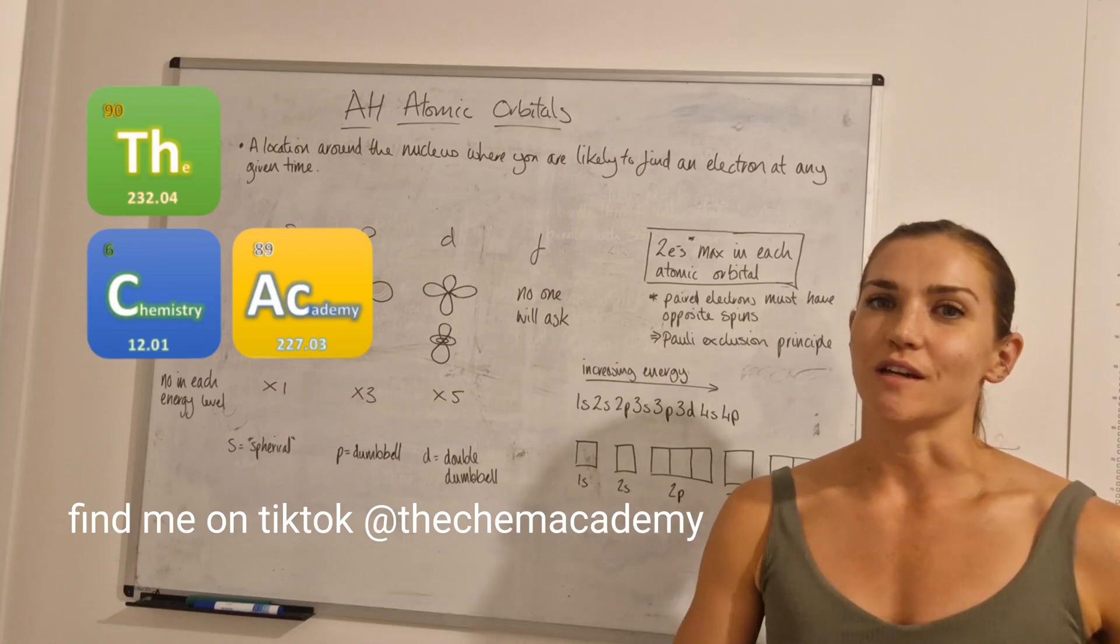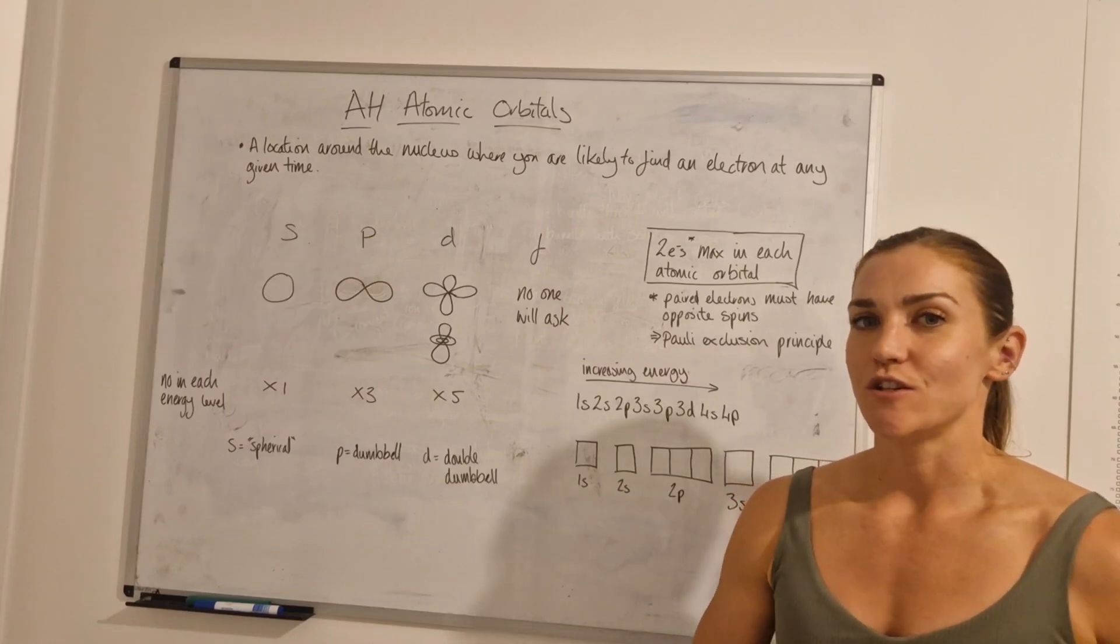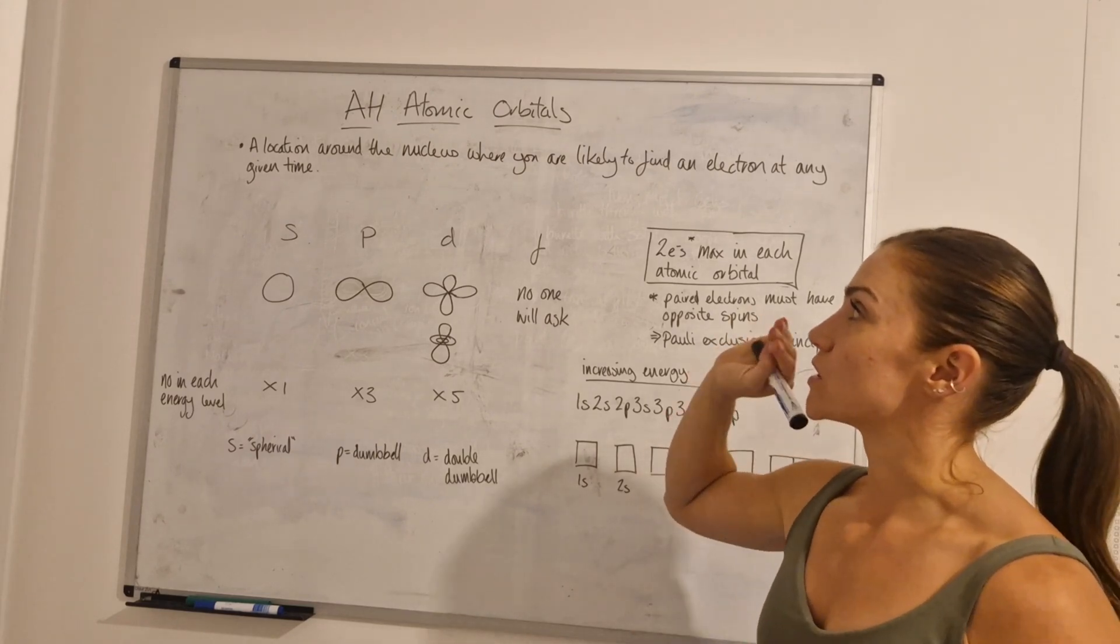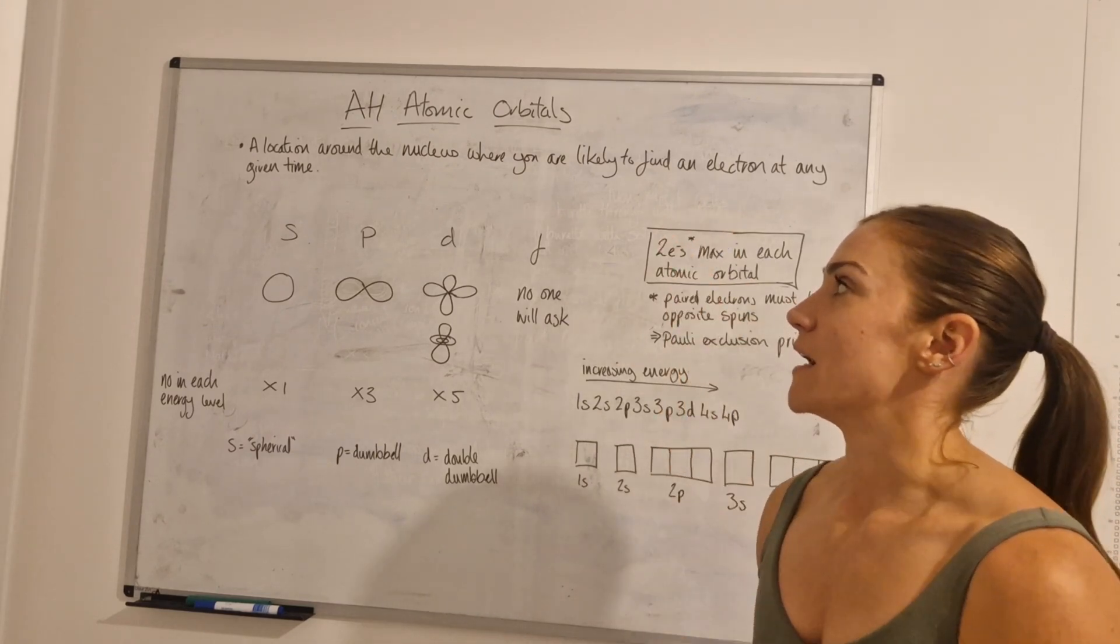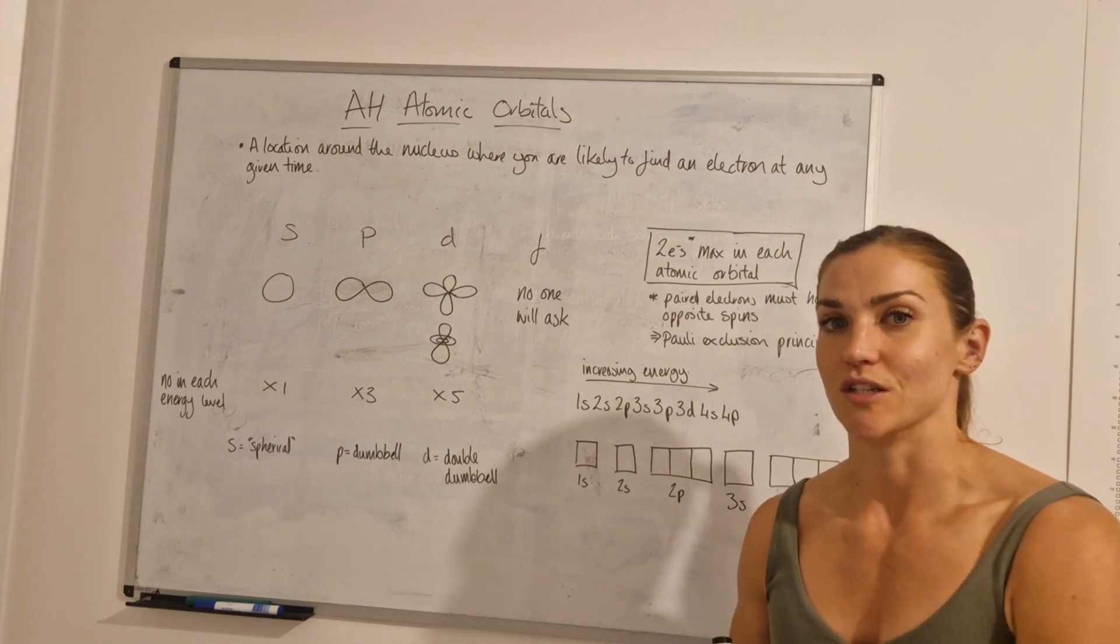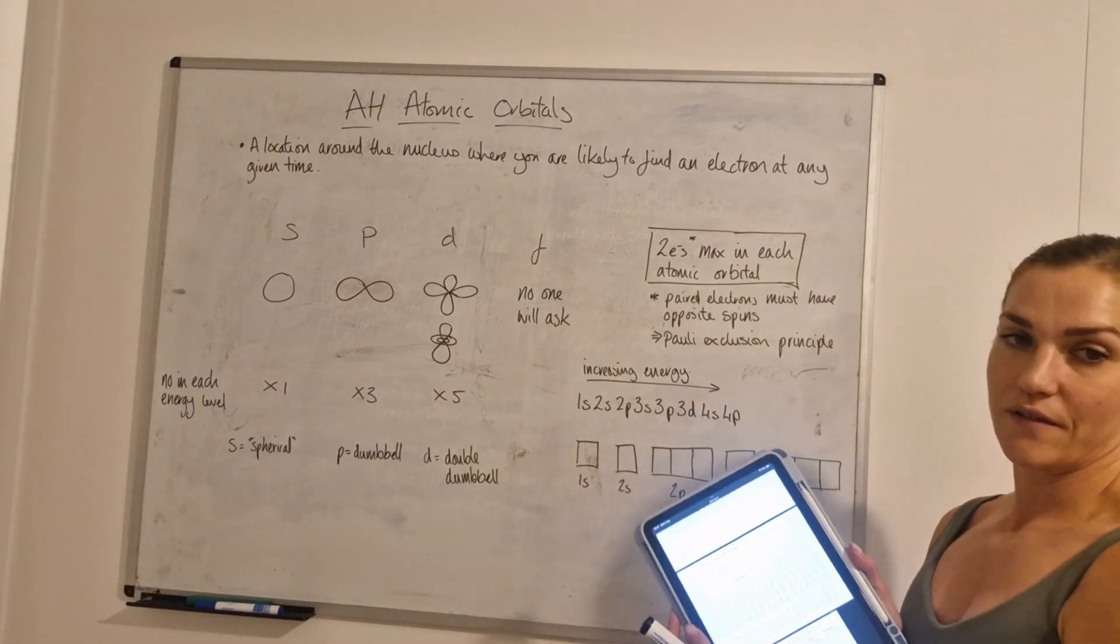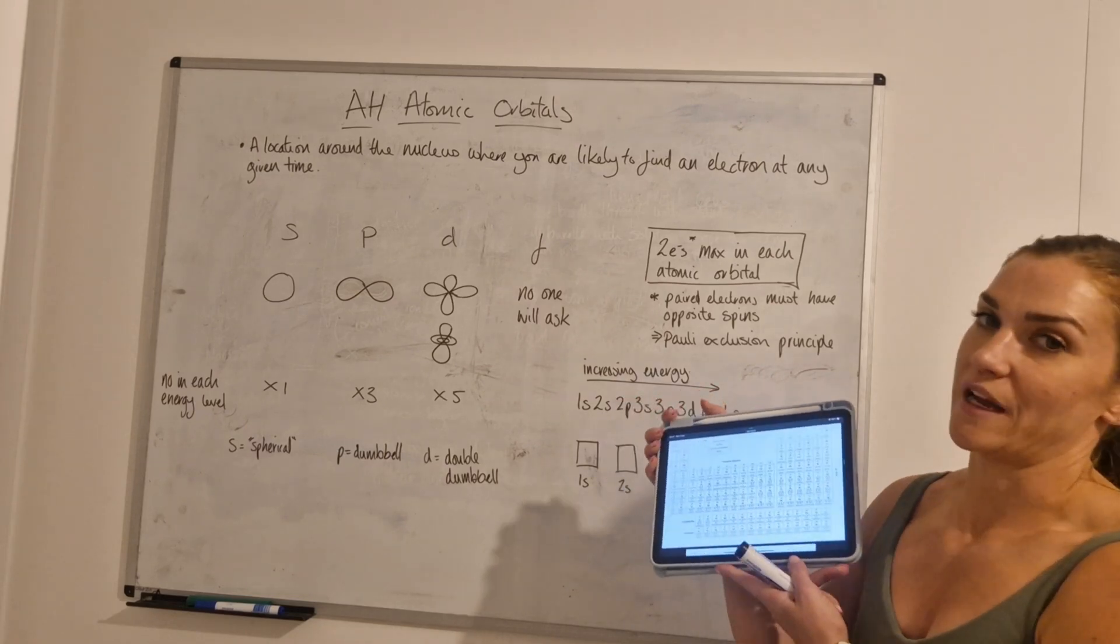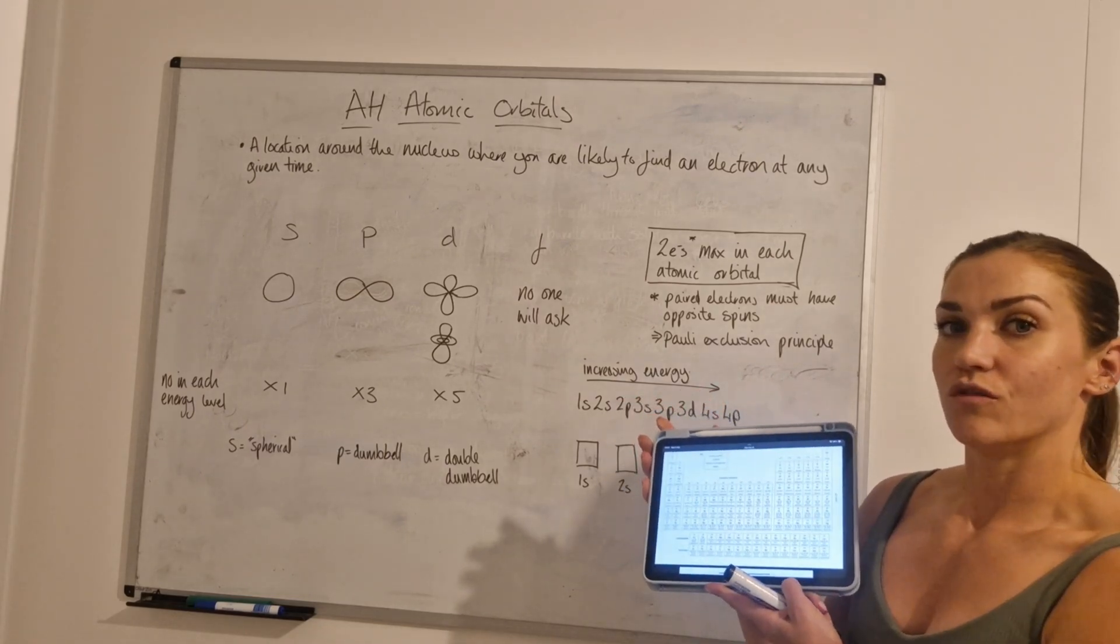Hi there and welcome to the Chemistry Academy. In this video we're going to go over advanced higher theory, focusing on atomic orbitals and how that information feeds into electron configurations. You probably want to have your data booklet handy for this, ideally page 8 is best for anything electron related.